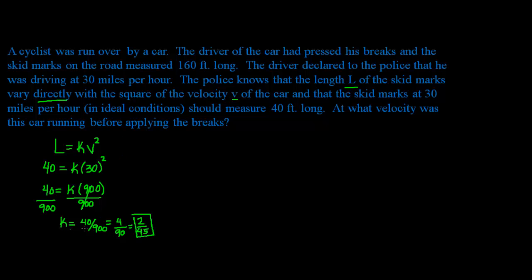And I like to leave the K as a fraction just because it's more precise. And once you find K, you take this equation that we wrote initially and we fill it in with our K. So I'm going to rewrite it as L is equal to 2 over 45 V squared. Now this is my mathematical model for this situation. I can use this model to answer the question they're asking.